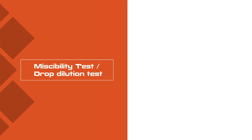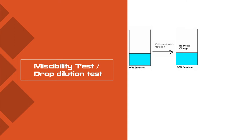Next, we will move on to identification tests for emulsions. The first test we are going to discuss is the miscibility test or drop dilution test. Take a beaker and add an oil in water type of emulsion. Add some water to it. When you observe that there is no phase change, you can confirm this particular emulsion is oil in water type.